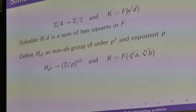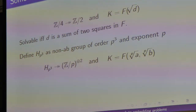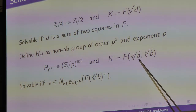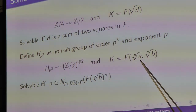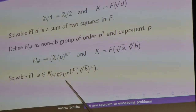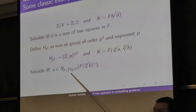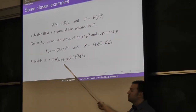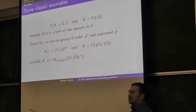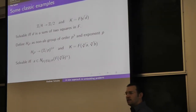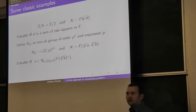The embedding problem in this setup is solvable precisely when you look at the first generating element, and that first generating element appears as a norm when you look at the sub-extension generated by the second element.